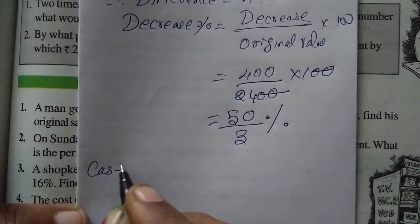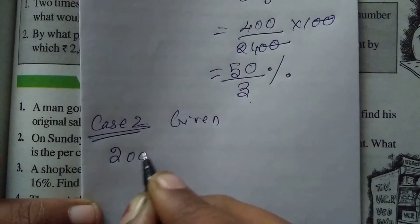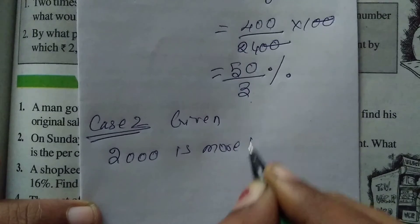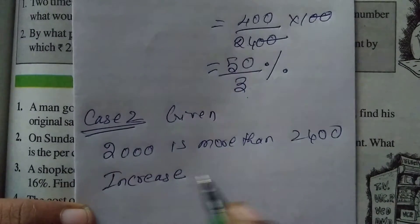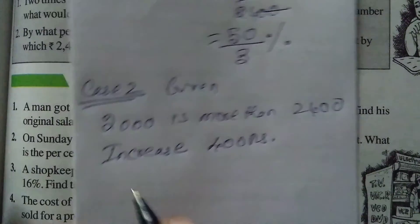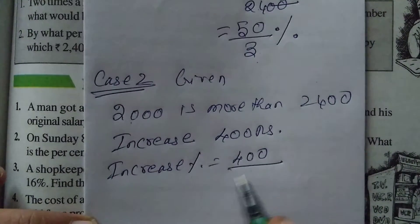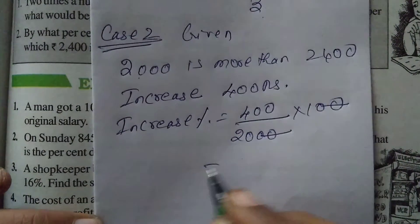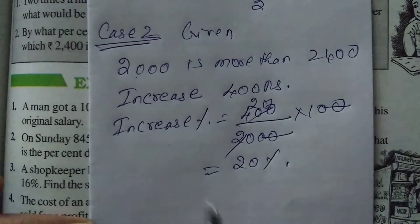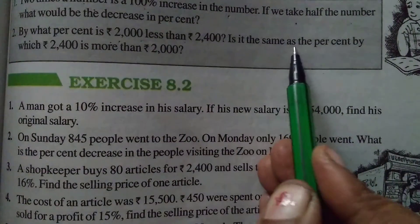Case 2: 2,400 is more than 2,000, so it is an increase of 400 rupees. Increase percentage equals 400 divided by original value 2,000 into 100. When we cancel, this becomes 400/2000 into 100 equals 20 percent. So decrease is 50/3% while increase is 20% — they are not the same.